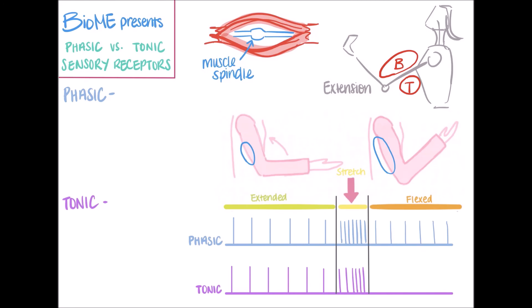Meanwhile, the tonic receptors keep firing at an increased rate. These two types of sensory receptors allow for different types of information to be communicated.